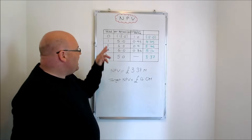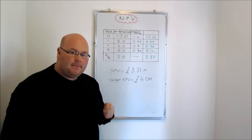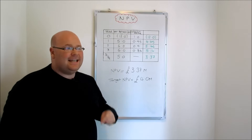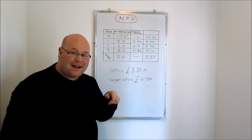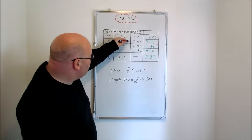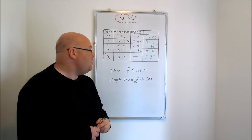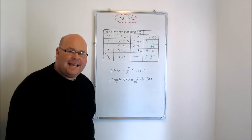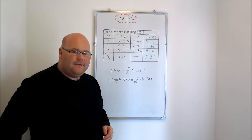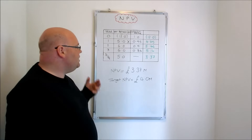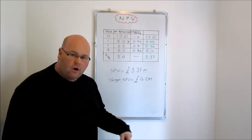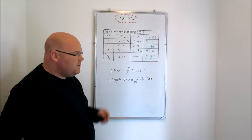At the end of year one, forecasts predict this project returns 5 million pounds. But that's in 12 months' time — 5 million pounds in a year's time is not as valuable as having it right now. So we take that 5 million pounds and multiply it by a discount factor of 0.95, which gives us 4.75 million. Although the project returns 5 million by the end of year one, that's only as valuable as having 4.75 million right now.